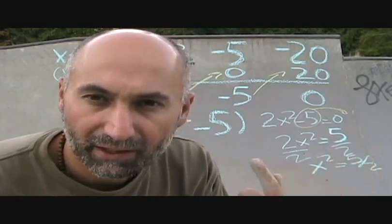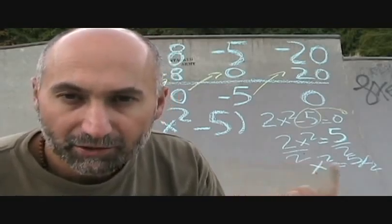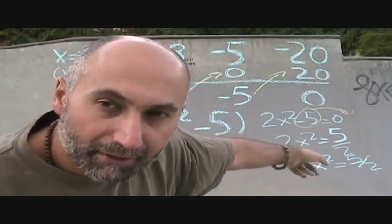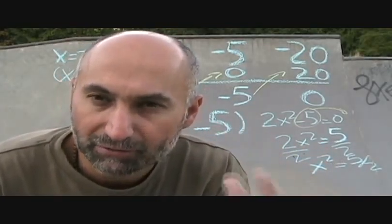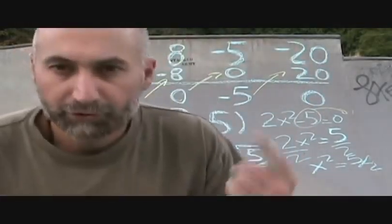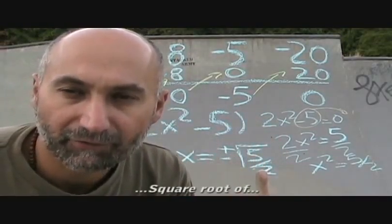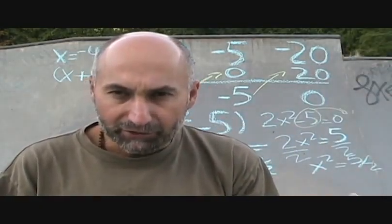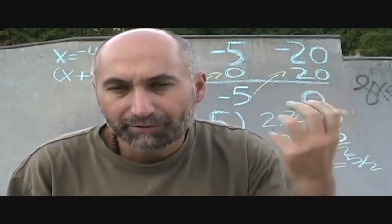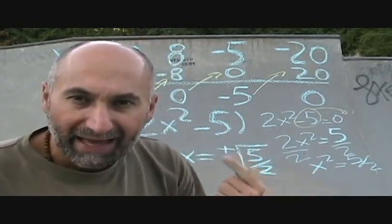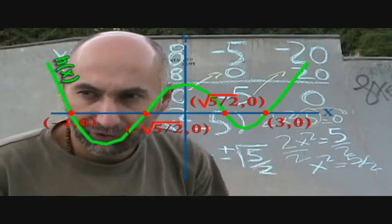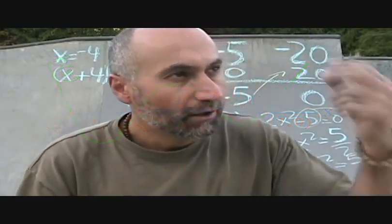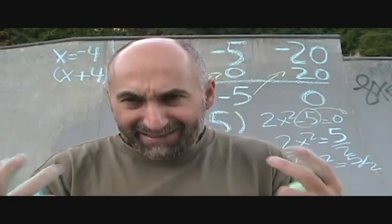To solve for x, take the square root of both sides. The square root of x squared is x, and the square root of 5 over 2 is plus or minus the square root of 5 over 2. So our solutions are x equals plus or minus the square root of 5 over 2. Going back to the original function h of x to the power of 4, the zeros — where the function crosses the x-axis — are x equals positive square root of 5 over 2, x equals negative square root of 5 over 2, x equals negative 4, and x equals 3.